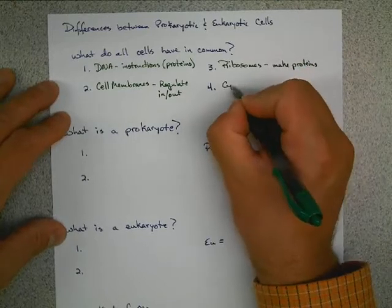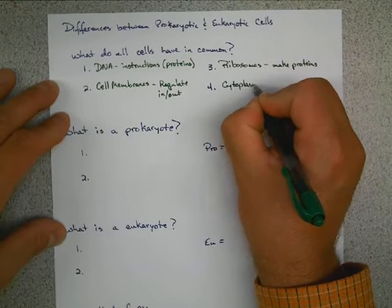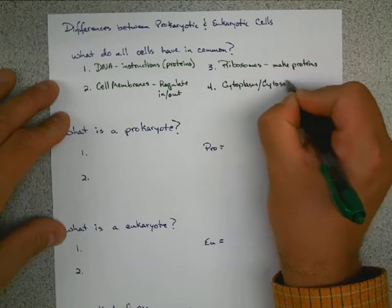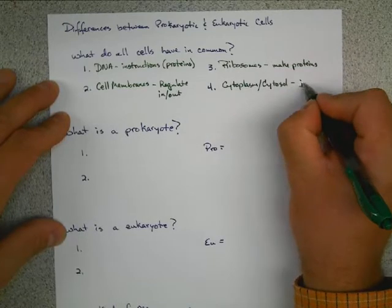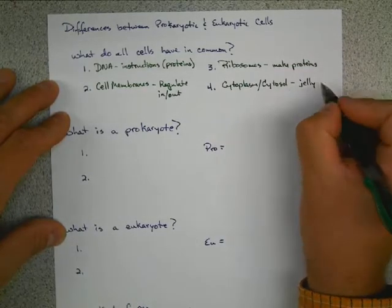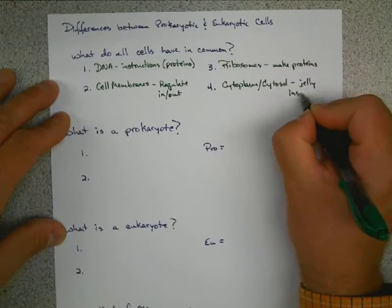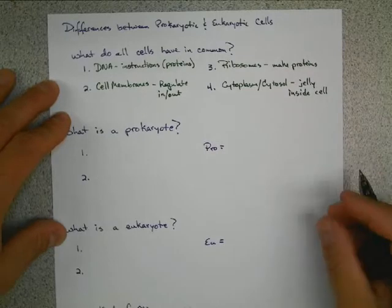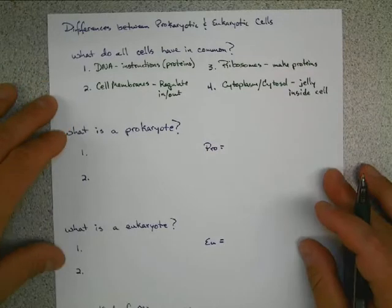And then the fourth thing is going to be the cytoplasm. Sometimes you just see it referred to as cytosol. And that's essentially the jelly or syrup inside a cell. And that's what all the organelles are going to be floating in.